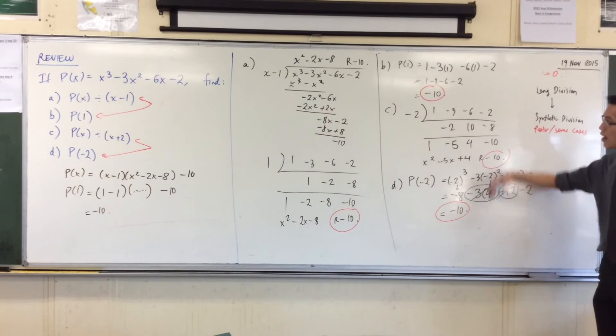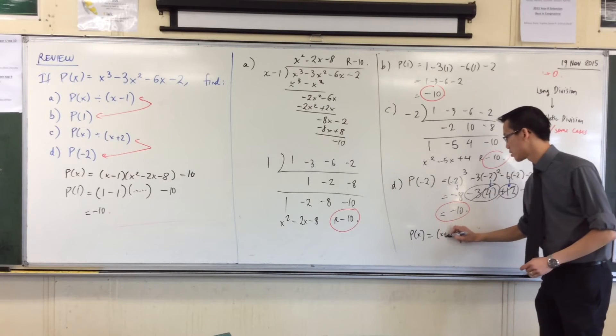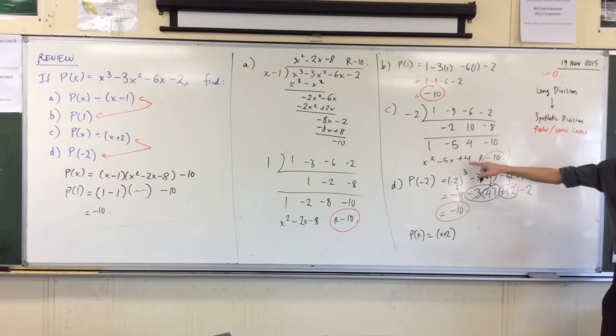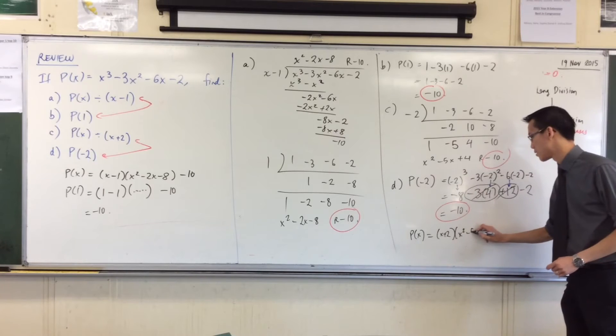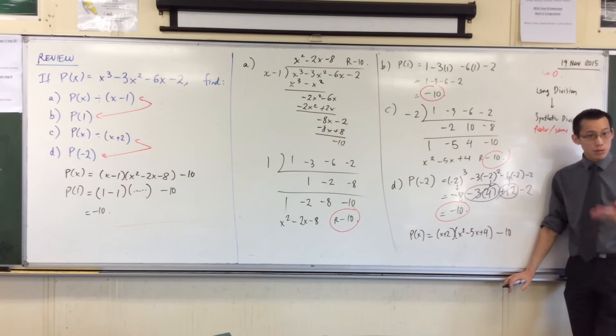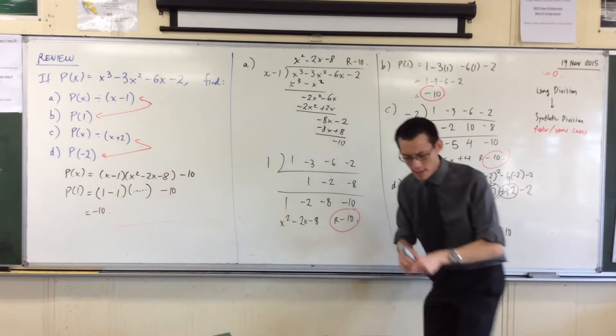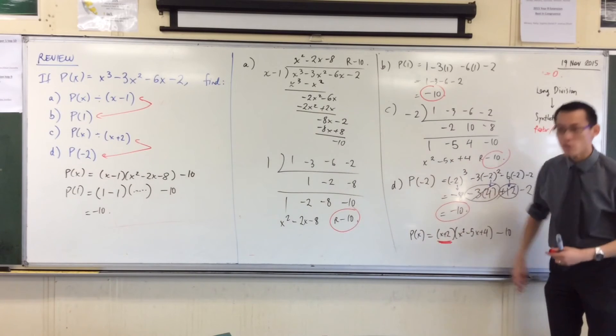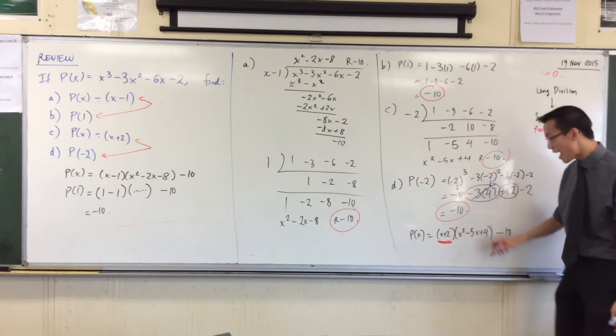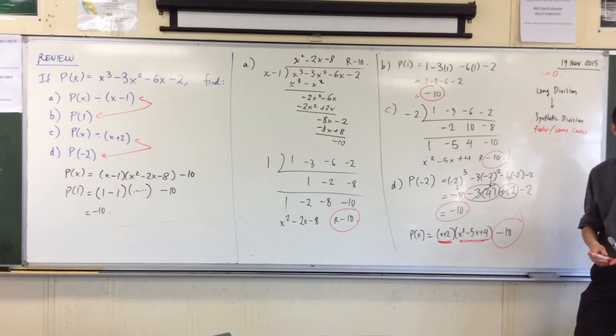And in exactly the same way coming over here, the part C division told us that we could write P(x) like this: P(x) equals x plus 2 times this quotient, x squared minus 5x plus 4, and this remainder. So sure enough when you put in negative 2, do you see it's gonna make this 0. So I don't care what's here, 0 times anything will be 0, and all you get left with is the remainder. Does that make sense?